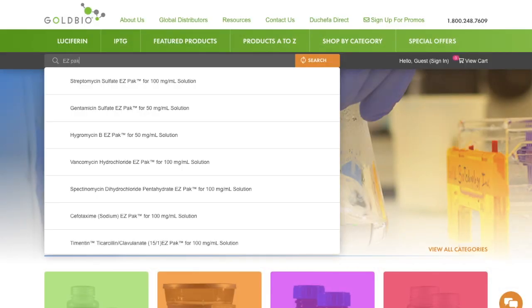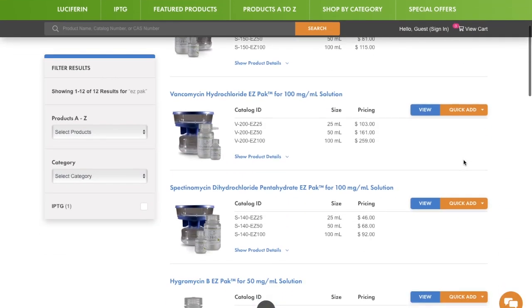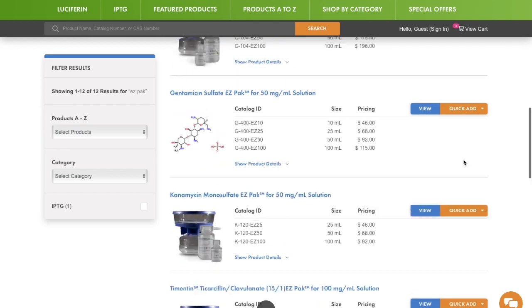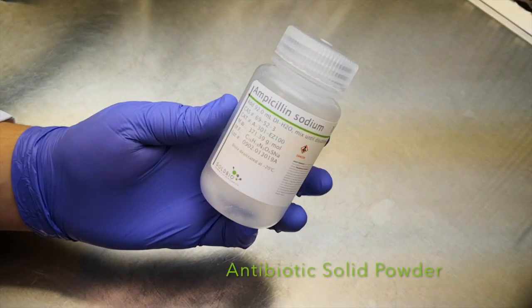Our larger easy packs come in volumes to make 25, 50, and 100 milliliter solutions. They all include one bottle of pre-measured antibiotic powder.